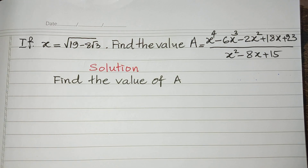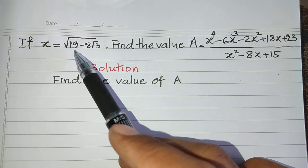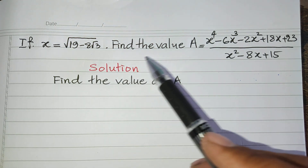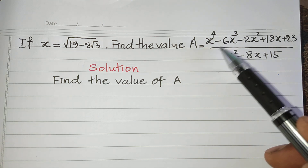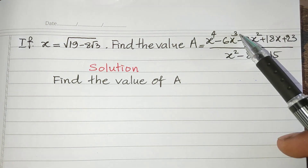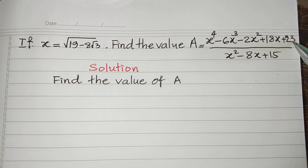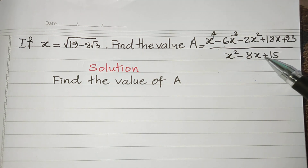Hello everyone, welcome to my YouTube channel. Today I have one exercise. If h equals square root of 19 minus h square root 3, find the values of the expression: a equals h to the power 4 minus 6h cubed minus 2h squared plus 18h plus 23, divided by h squared minus 8h plus 15.